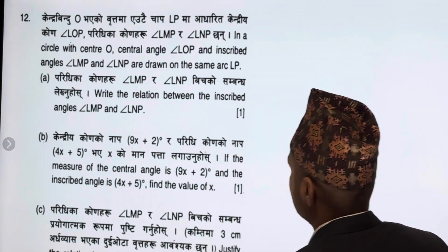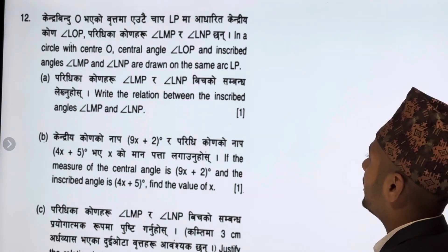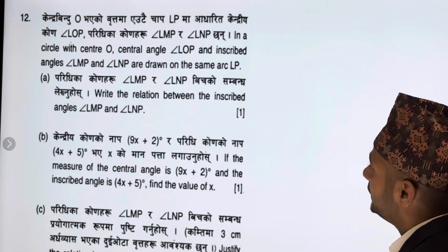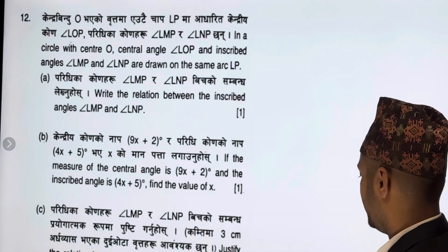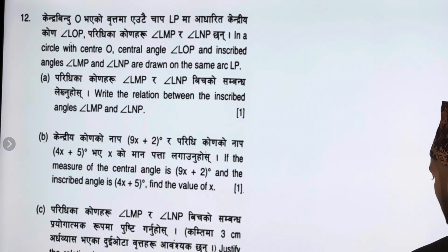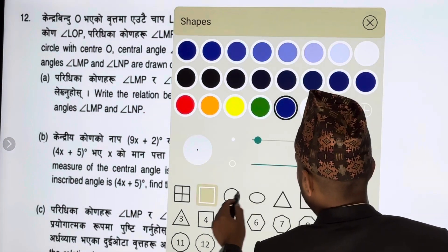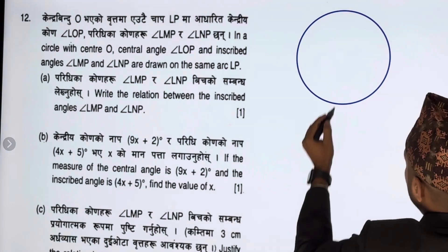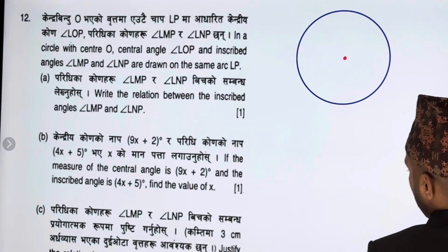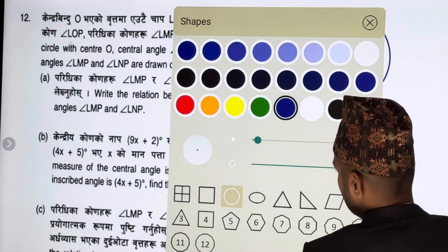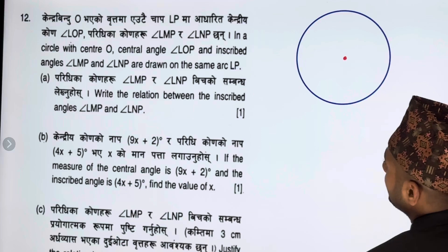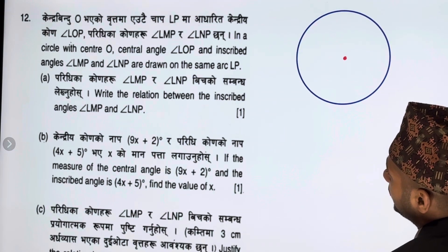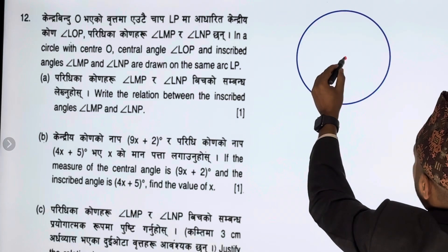In a circle with center O, we have a central angle LOP and inscribed angles LMP and LNP drawn on the same arc LP. First and foremost, let's develop the figure. We draw a circle with center O, and I can see the inner circle with center O and central angle LOP.